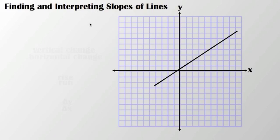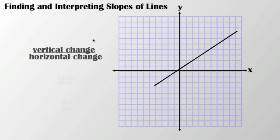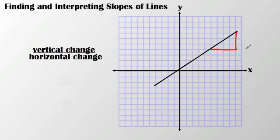The goal today is to find and interpret slopes of lines. The slope of a line is basically represented as the vertical change over the horizontal change. The vertical change is the amount it increases from one area to the next on the y-axis, over the horizontal change — the amount it increases from one area to the next on the x-axis. If I take a little snippet of the line over here, I'm going to focus on that vertical change.